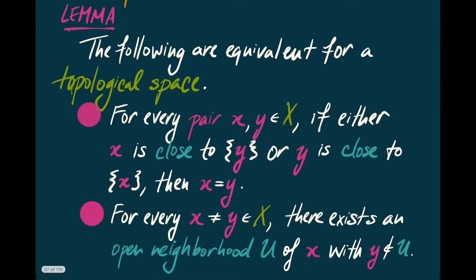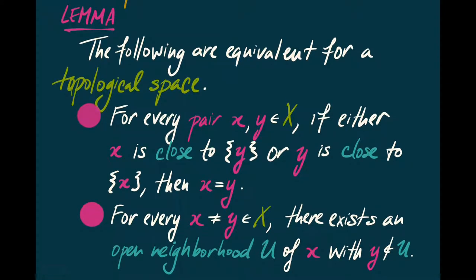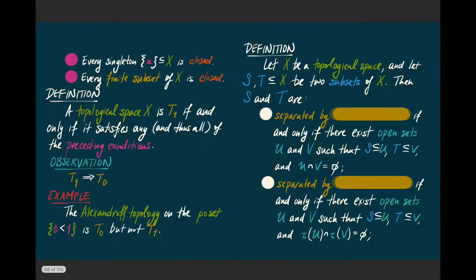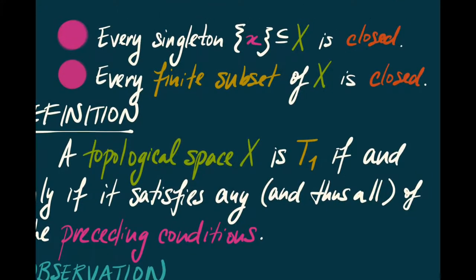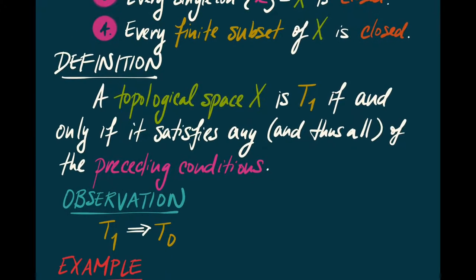Here's a lemma. The following are equivalent for a topological space. First, for every pair of points x and y, if either x is close to y or y is close to x, then x equals y. Second, for every pair of distinct points x and y, there exists an open neighborhood U of x such that y is not contained in U. Third, every singleton is closed. Fourth, every finite subset of X is closed. If any — and therefore all — of these conditions are satisfied, we say the topological space is T1.